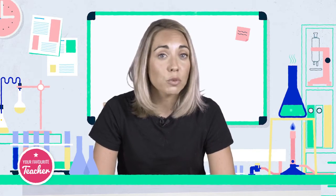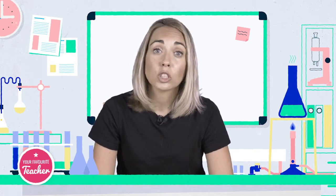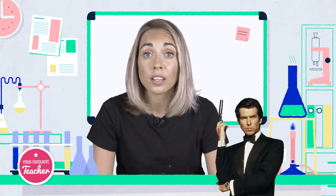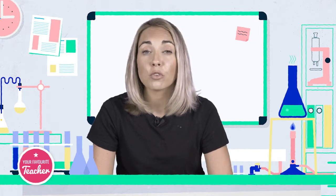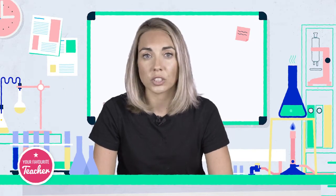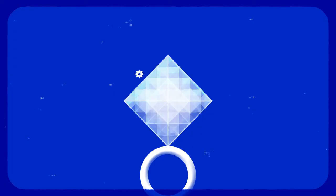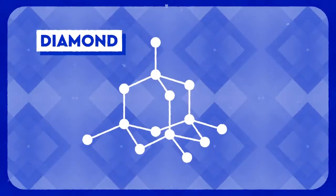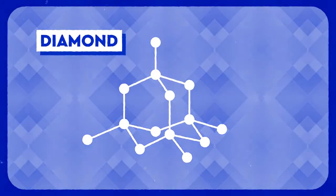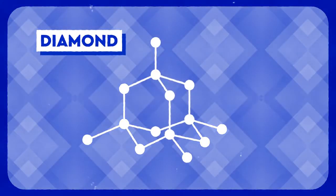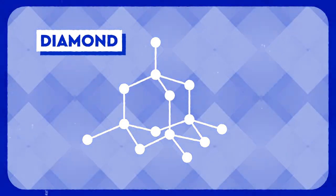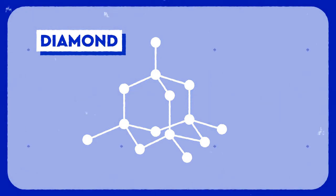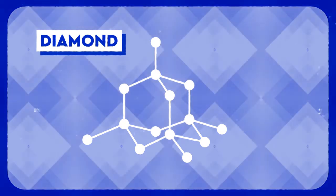You need to know about four different ways in which carbon atoms can bond with other carbon atoms, forming different structures. The first is diamond. Each carbon atom in a diamond structure forms four covalent bonds with four other atoms in a tetrahedral shape.